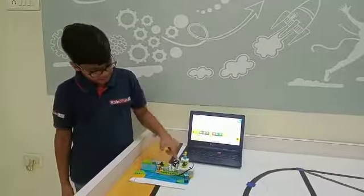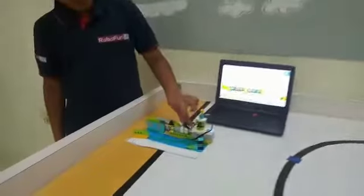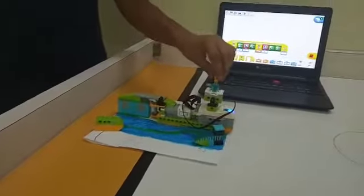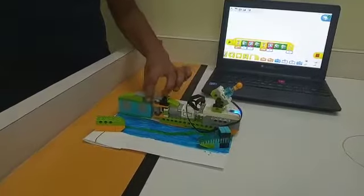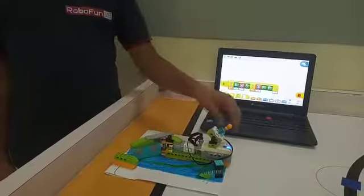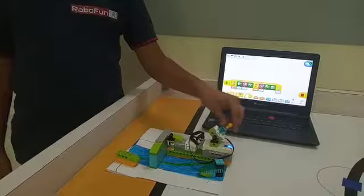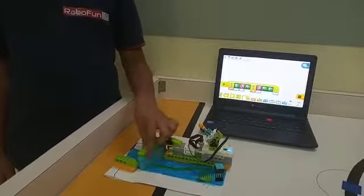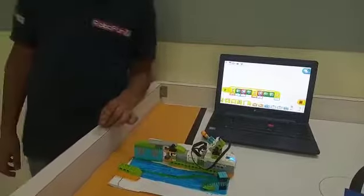I have used one smart hub, one motor and one tilt sensor. When the tilt sensor is tilted down, the floodgate will open and the tilt sensor is tilted up, the floodgate will close. Let's see how it works.